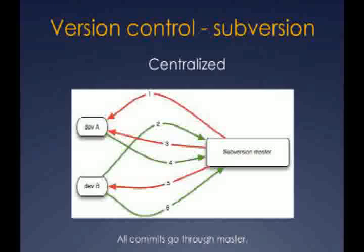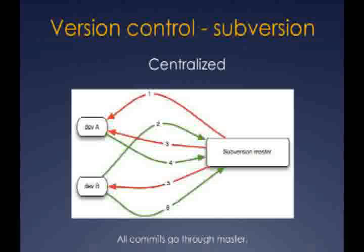With Subversion you have a central server that coordinates everything. If developer A wants to check out source code, they check it out. If in the meantime developer B makes a commit to the master, then developer A has to pull those commits and do the merge on their side before checking their changes back in. All commits go through master. This is a reasonably understandable, centralized model — you have complete control over what happens to your software and your VCS repository. It's what everybody's been using, one way or another, for probably the last 30 years.